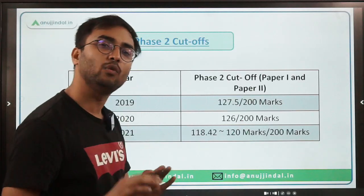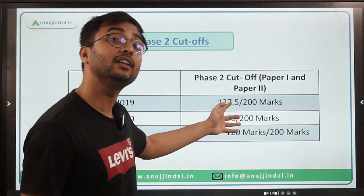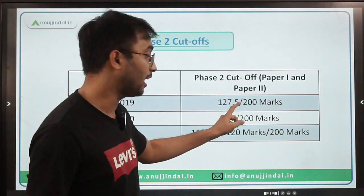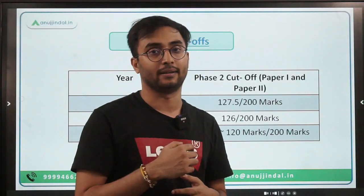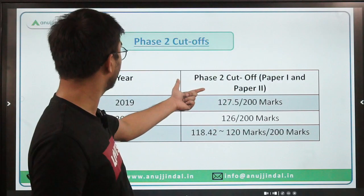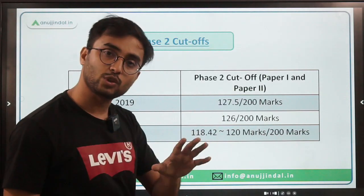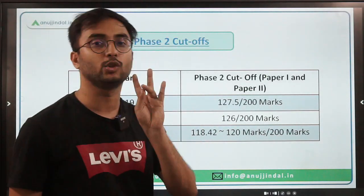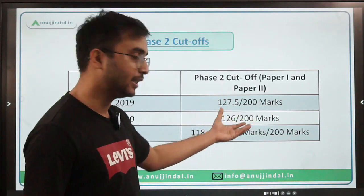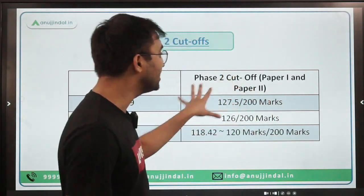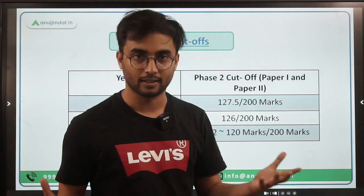Looking at the three-year trend, anyone can tell that the cutoff has been decreasing, which means difficulty in the exam is increasing. The cutoff dropped in 2021 because descriptive questions were added. In the 2021 exam pattern, six descriptive questions were added; out of six questions you had to solve four - two questions of 15 marks and two questions of 10 marks. Because of these descriptive ARD and ESI questions, the cutoff decreased from around 127-126 to 118. Now this was just the numerical thing; let's see what else we can analyze.